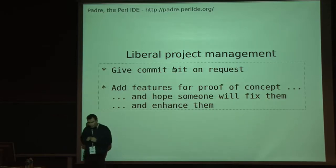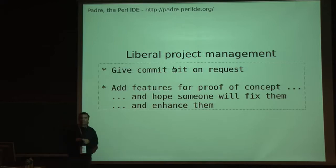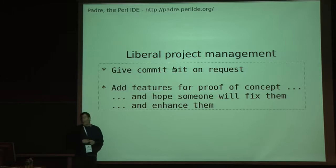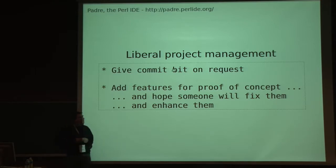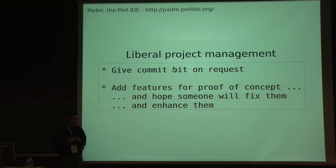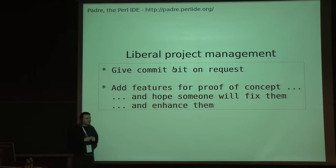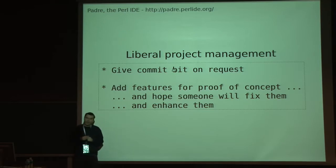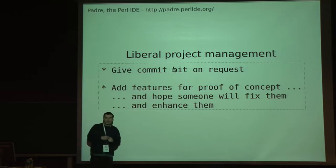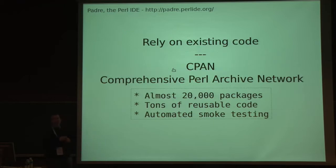How were we doing project management? In many open source projects, project management is quite strict. We took a liberal approach — giving out commit access basically to everyone who asks. The Parrot project, which was the first implementation of Perl 6, took the same approach and it took off really nicely. Same with Padre. But at one point we'll have to stop this, because when the project gets big, it gets a bit crowded. The other thing we were doing is adding features even if they weren't complete, even if we knew they were full of bugs, with the hope that other people will come in and fix those bugs. Most features in Padre now have been rewritten about two or three times already, which is really good.